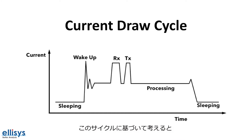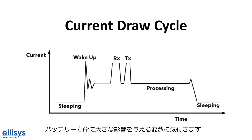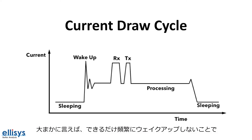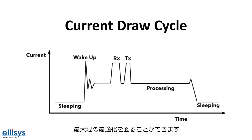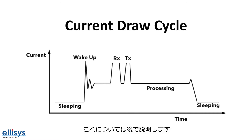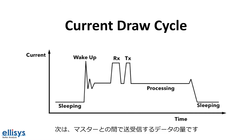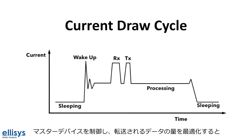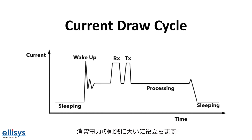Based on this cycle, we can notice a few variables that can have a great impact on battery life. At a high level, we could get the most optimization by not waking up as often as possible. This could be achieved by adjusting the connection interval and the slave latency, which we'll talk about in a little bit. The next variable is how much data we are receiving from and sending to the master. If you have control over the master device, optimizing the amount of data being transferred can help a lot in reducing power consumption. The same goes for transmission from the slave device.